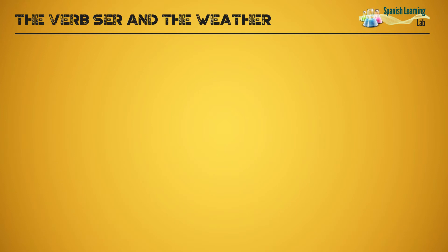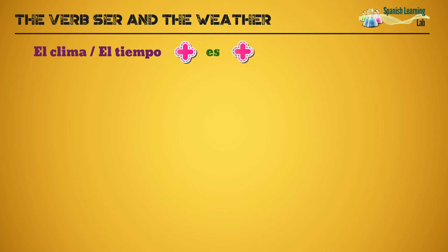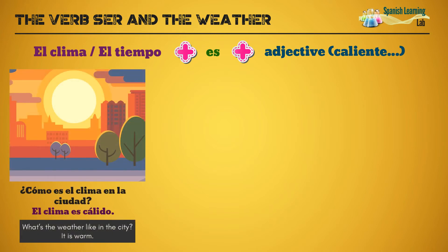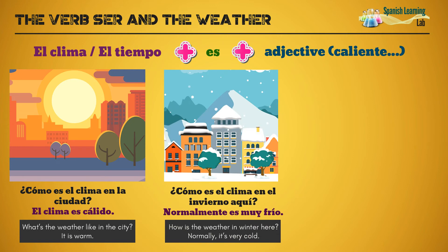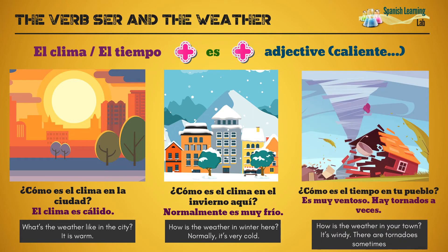The verb ser and the weather. The verb ser is also very useful for this topic. Unlike the verb estar, ser will be used to talk about the weather that prevails in a city, in a season, or in a specific period of time, following this structure: el clima, plus es, plus an adjective about the weather. ¿Cómo es el clima en la ciudad? El clima es cálido. ¿Cómo es el clima en el invierno aquí? Normalmente es muy frío. ¿Cómo es el tiempo en tu pueblo? Es muy ventoso. Hay tornados a veces.